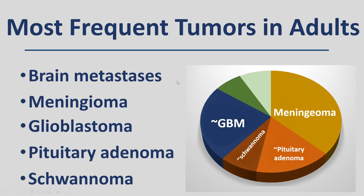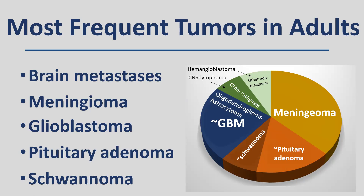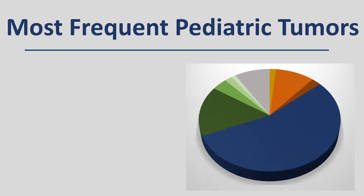Other tumours typical for adults include: among non-malignant tumours, hemangioblastoma — which you will never see in children — and CNS lymphoma, a typical tumour of older adults. In the glioma group, oligodendroglioma and astrocytoma are also typical adult brain tumours.